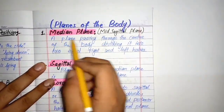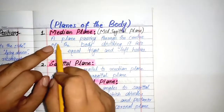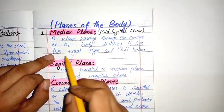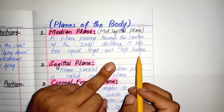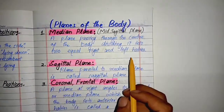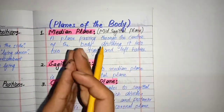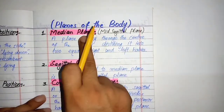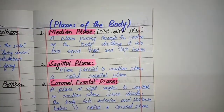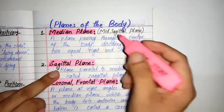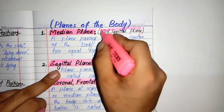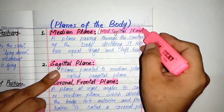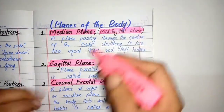The first plane we have is the median plane. The median plane is a plane passing through the center of the body, dividing it into two equal right and left halves. This is called the median plane, and it is also called the mid-sagittal plane. The second names of all these planes are very important to memorize.